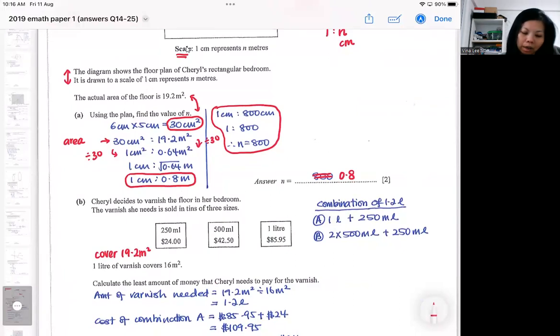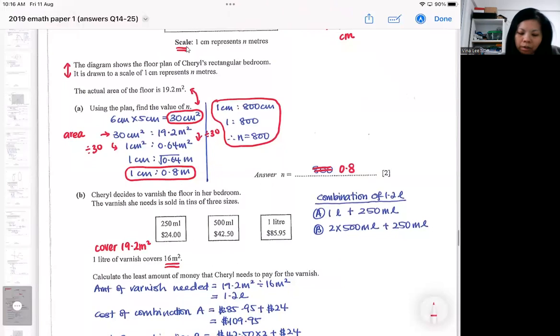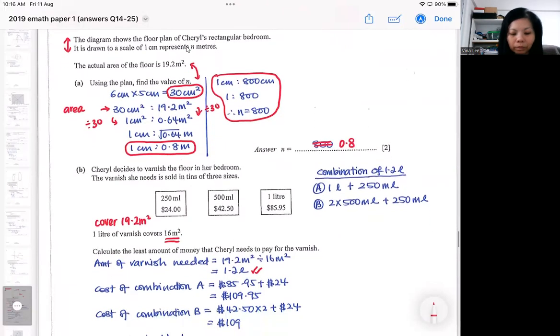One liter can cover 16. So you do your calculation, you must show how much you need first. After you show how much you need, then you should think about a real life combination. So how, in how many ways can you buy your 1.2 liters?